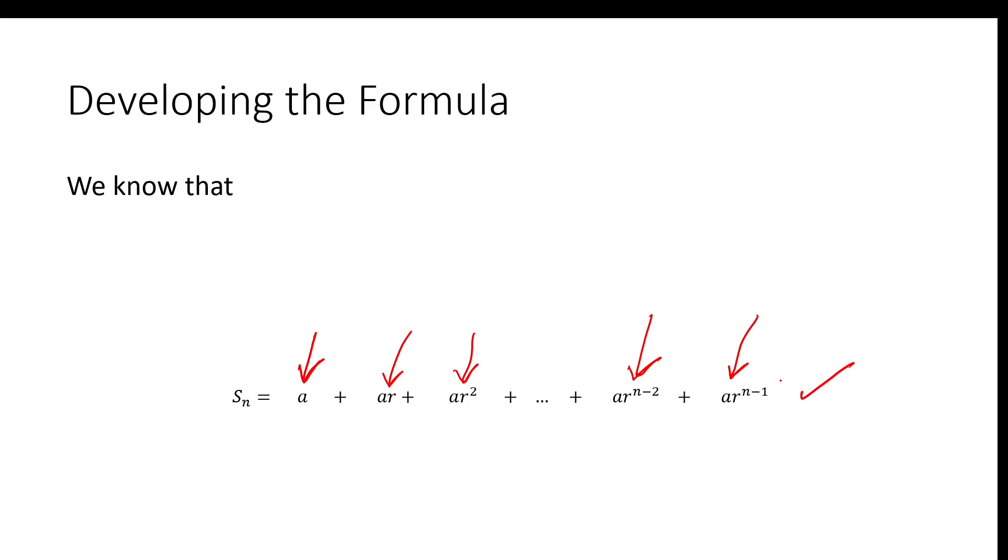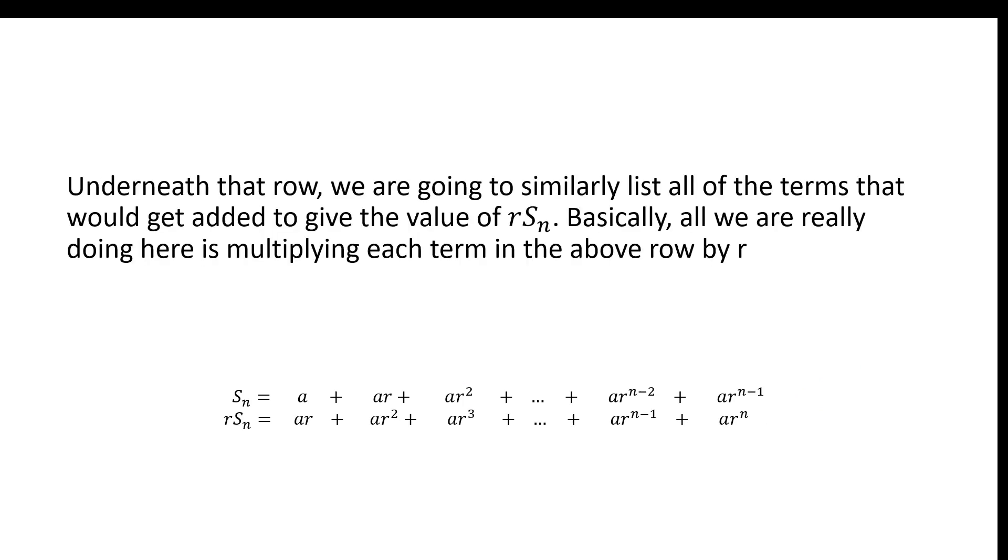Now let's do something pretty clever here. Right underneath it, imagine that we wanted to know the value of R S_N. So basically what we're going to do is we're going to take R, and we're going to distribute it to every term, and that'll give us R times S_N. The reason why we're doing this will become clear in a moment. So if we wanted to know what R times S_N is, it would be the sum of each one of those individual terms multiplied by R.